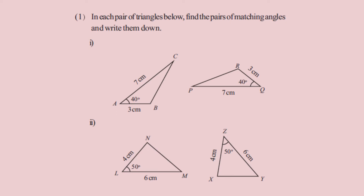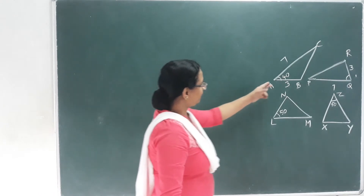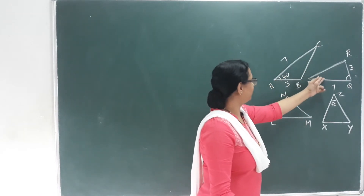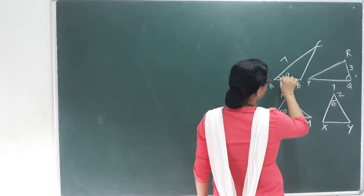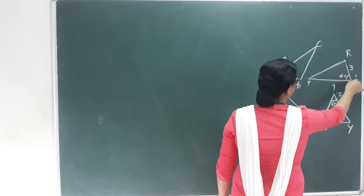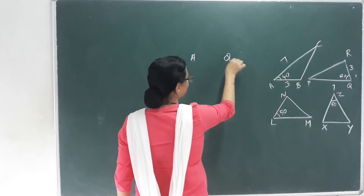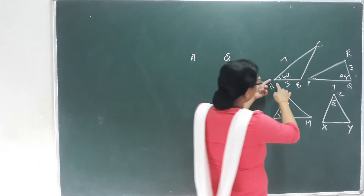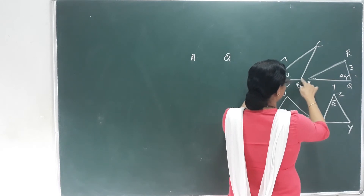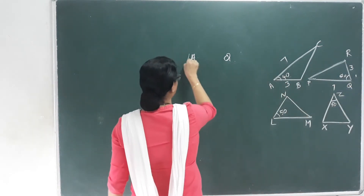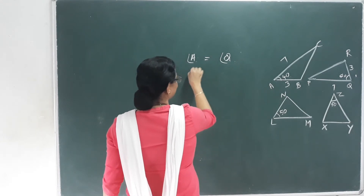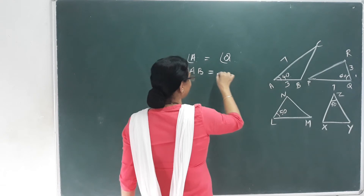Next question: page number 15. In each pair of triangles below, find the pair of matching angles and write them down. There are two pairs. That is the first pair — triangle ABC. Now, angle A is 14 degrees and angle Q is 14 degrees. Then angle A corresponds to angle Q. Here is the other side — you can include the third side of the triangle, which is equal to RQ.